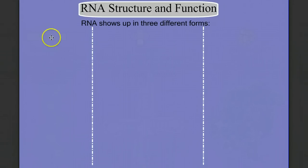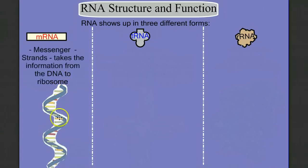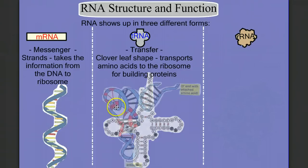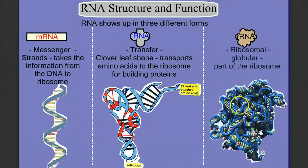RNA shows up in three different forms: mRNA, tRNA, and rRNA. mRNA stands for messenger RNA, and it's linear — it's a strand. Its job is to take the message from the DNA to the ribosome. Then we have tRNA, or transfer RNA, sometimes referred to as a cloverleaf shape. Its job is to transfer amino acids to the ribosome for protein construction. And then we have rRNA, or ribosomal RNA, which composes part of the ribosome along with proteins.